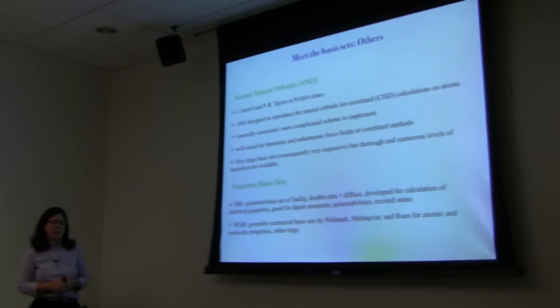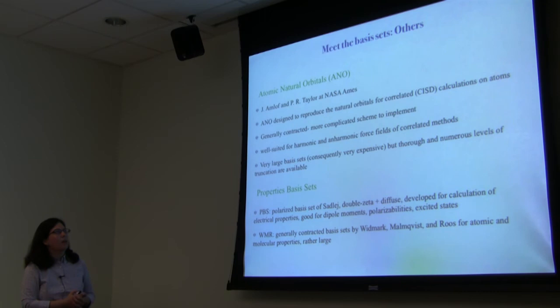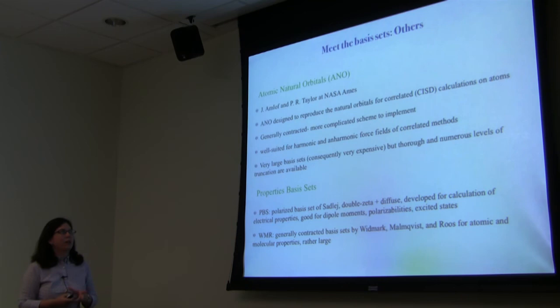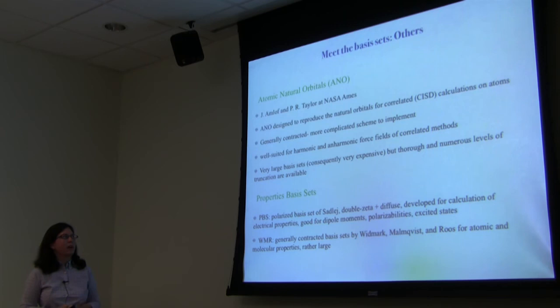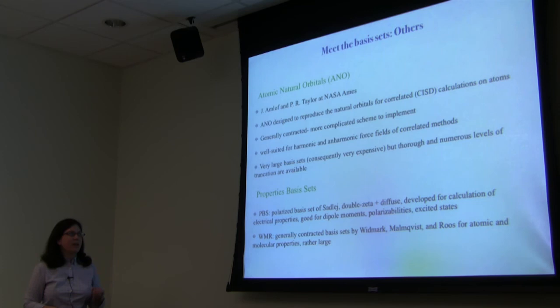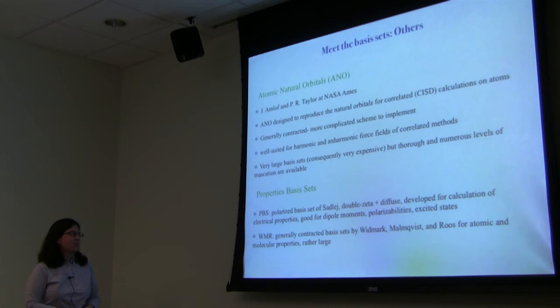These are the two most widely used families of basis sets, but there are others. The atomic natural orbital (ANO) basis sets, developed by Almlöf and Taylor, are designed to reproduce natural orbitals from CISD calculations on atoms. They are generally contracted for computational savings while retaining many basis functions. These are very large and expensive, but exist for most atoms and numerous truncation levels are available — you can form basically any size basis set you want from the ANOs.